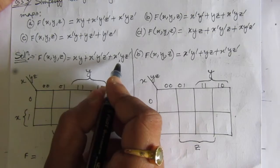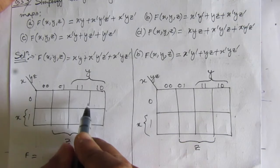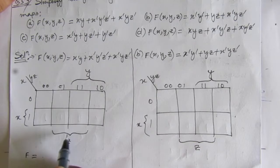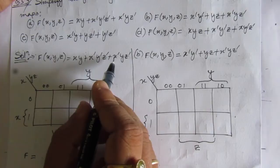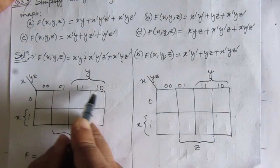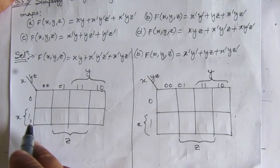In the K-map, this whole row has x equal to 1. We have to find out that y is 1 for these two columns. Similarly, z is 1 here and z is 1 here, while z is 0 for this column and this column. If there is a complement, we consider it to be 0 in these values. For x and y: x is 1 and y is 1.